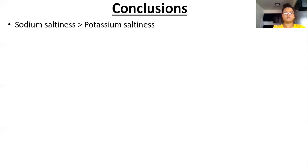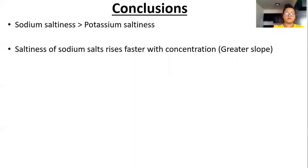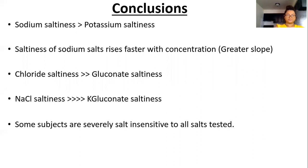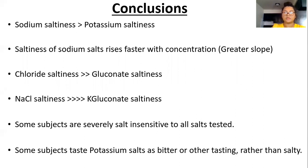For our conclusions, we found that sodium salts are saltier than potassium salts. We found the saltiness of sodium salts rises faster with concentration, resulting in a greater slope. We found that chloride salts are much saltier than gluconate salts. We found that sodium chloride is very privileged as sodium is the saltier cation and chloride is the saltier anion. So you would get a strong, clean, salty taste from sodium chloride. Whereas with potassium gluconate, it is the complete opposite, as potassium is the least salty cation and gluconate is the least salty anion. So you would not get much of a salty taste from potassium gluconate. We also found that some subjects are severely salt insensitive to all the salts tested. But as of right now, we're unsure why. And lastly, we found some subjects taste potassium salts as bitter or other tasting rather than salty.